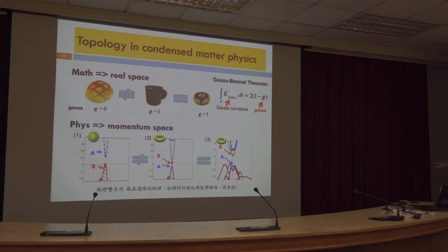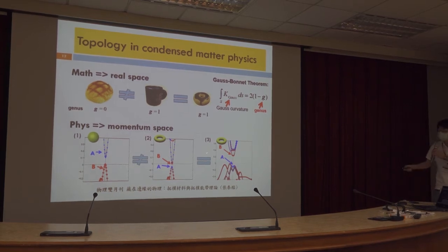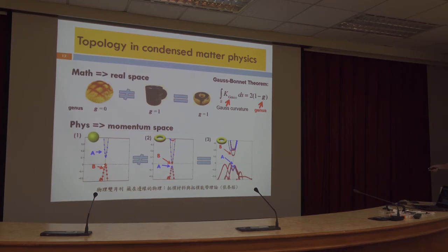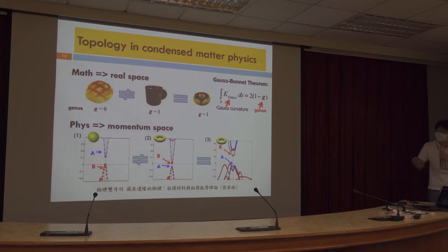But in physics, we are familiar with the band structure, so our topology is in momentum space. Here I show you an example — there are three band structures. We see the geometry of band structure one is very similar to band structure two; the geometry here refers to the band gap size or the shape of the band. However, the topology is different. And the geometry of band structures two and three looks entirely different; however, the topology is identical. This results in a counter-intuitive aspect of band theory.